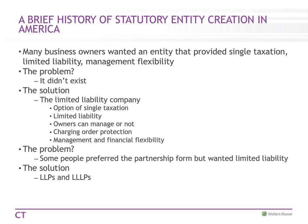A lot of business owners over the years saw this kind of taxation and wanted it too, as well as flexible management. What came to the rescue was the limited liability company. It gives you single taxation — the entity itself is not taxed, but when the members receive a distribution, they are taxed. The members and managers have limited liability. Judgment creditors are limited to a charging order. The states see this as a pick-your-partner arrangement — your partner isn't your partner's creditor. Management is very flexible.